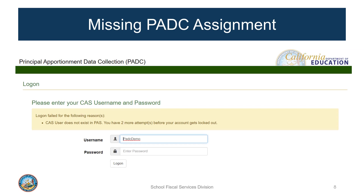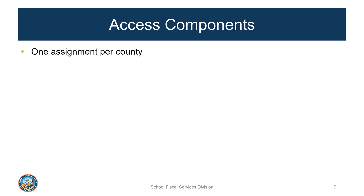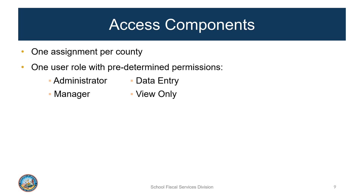Before requesting a user assignment, each person must first decide on the level of access needed. There are several decision points in determining the proper level of access. Each user can have only one assignment within a county, which works for the majority of users. One exception might be a cross-county SELPA member where a single user may need two different roles from two different counties. Another exception is a charter school management organization serving multiple charter schools, which may require multiple CAS usernames for the same individual. Once a county is selected, the user must determine their user role, which comes with predetermined permissions specifying what the user can do in the PADC web application.